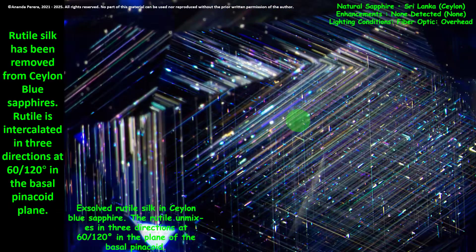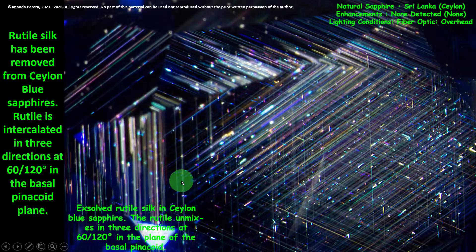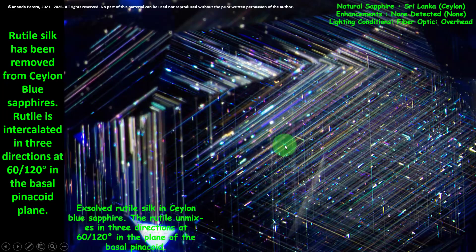Now we can see the 60 and 120 degree angles very well. Watch lesson number two in my channel and come here — then you can understand well, because this is very important. Rutile silk intercalated in three directions at 60 and 120 degrees in the basal pinacoid plane. The lighting condition here is fiber optic overhead.